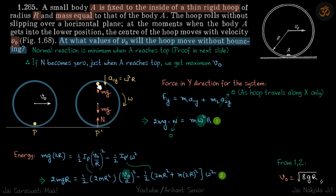For the force equation in the normal direction, let's take the whole loop and mass A as a system. The forces are mg downward on A, mg downward on the loop, and normal force N upward. The acceleration of the whole system in the y-direction is only due to mass A at the top, because the loop's acceleration in the y-direction is zero — the loop only accelerates in the x-direction.